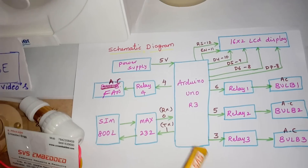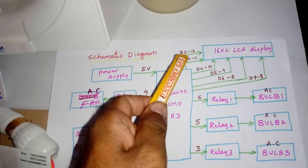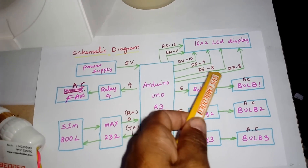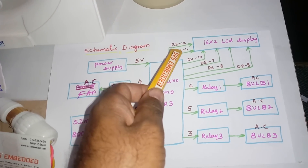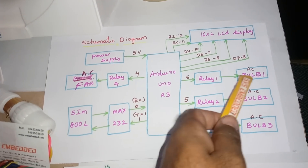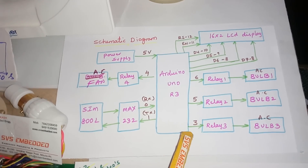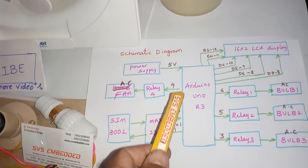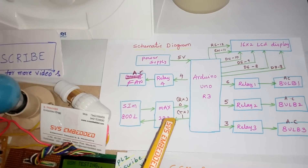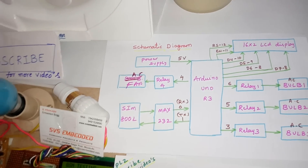This is my schematic or circuit diagram. Arduino Uno R3 with 16x2 LCD display — RS, Enable, D4, D5, D6, D7 connected to pins 12, 11, 10, 9, 8. AC bulb 1 on pin 5, relay coil 2 and bulb 2 on pin 3, relay 3 and AC bulb 3 on pin 4, relay 4 and AC fan. SIM800L RX and TX on pin 8 and 0.